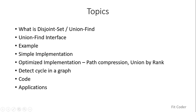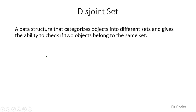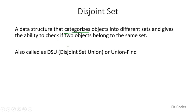A disjoint set is a data structure that categorizes objects into different sets and gives the ability to check if two objects belong to the same set. If you are given a universe of objects and want to categorize them such that one object can belong to only one set, this data structure is used. It is also known as disjoint set union (DSU), union find, or merge find.